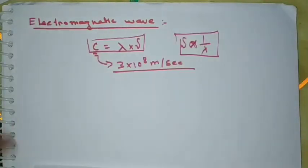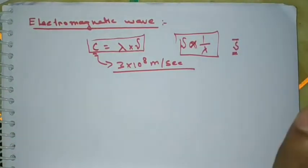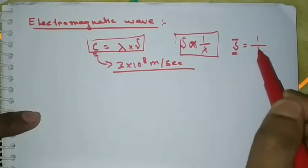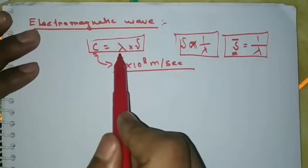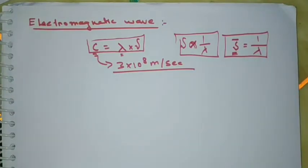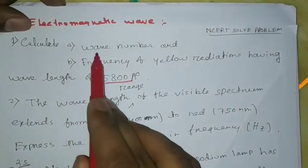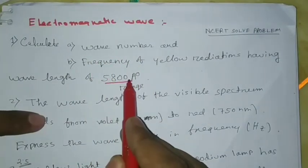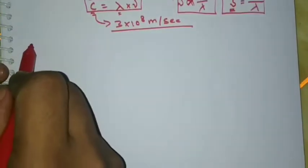What is called wave number? The wave number is represented by nu-bar. The wave number is equal to the reciprocal of wavelength — this is the formula for wave number. We have the wavelength, and first I will calculate the wave number. The wavelength of the radiation is 5800 Å. This is problem number one.